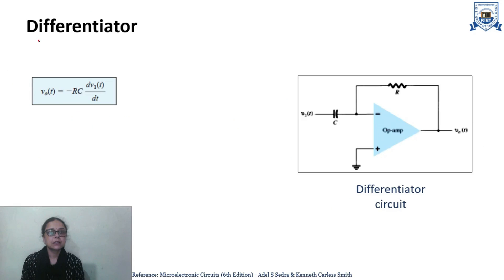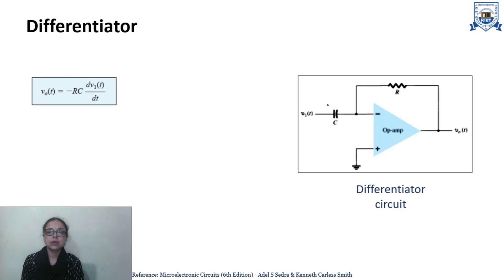Now the next circuit is the differentiator circuit. Here we can see the differentiator circuit with an op-amp. The difference between the previous integrator and this circuit is that the integrator was having a resistor at the input, but the differentiator has a capacitor at the input and a resistor at the feedback side. The feedback is from output to the inverting terminal, so it is a negative feedback.